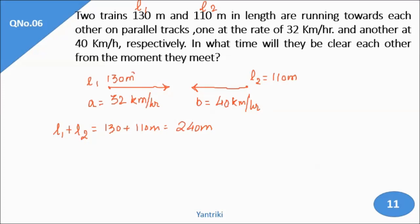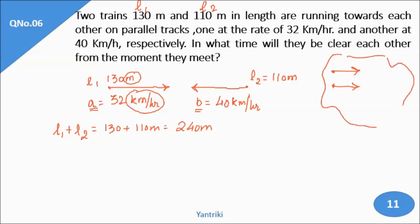The distance is in meters but speeds are in km per hour, so we need to convert. Rather than converting each separately, let's first do the operations. Since they are moving towards each other — opposite directions — we do addition of speeds. So a plus b gives 32 plus 40 equals 72 km per hour.